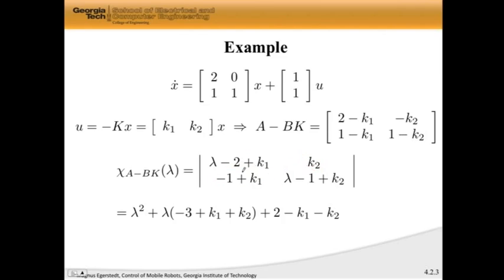You compute determinants as this times this minus this times this. If you do that, you get the following equation. Here are the two coefficients we're going to have to adjust.